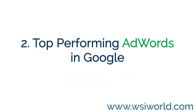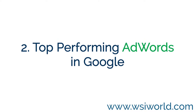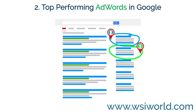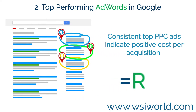2. Top Performing AdWords. In Google AdWords are paid for. This means your competitors who regularly show up in the top Google ad positions are doing so because they are paying for keywords. They do it with the knowledge that it helps them gain an advantage and will positively impact their return on investment.